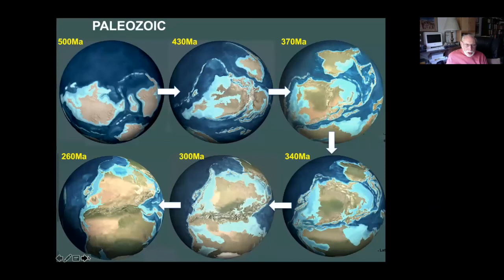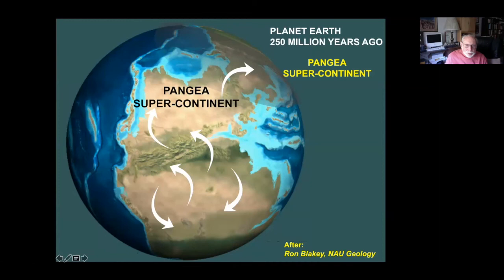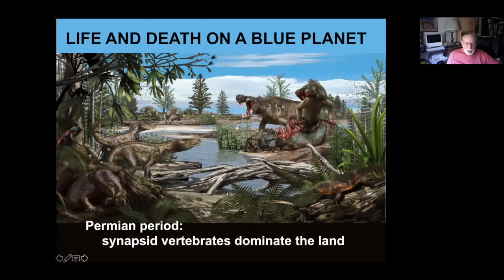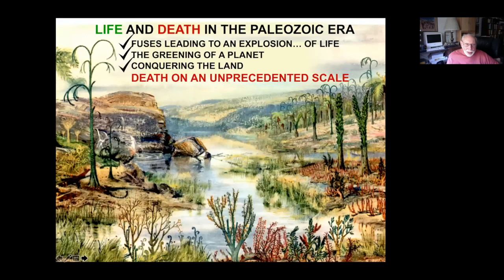This was facilitated by plate tectonics, because the Paleozoic was a time where the continents were merging. By the end, at 260 million years ago, they had merged into the supercontinent Pangea. This continent allowed for essentially unimpeded migration of animals to all parts of the continent that could sustain life. So the Earth's surface was conquered by the vertebrates, by the animals. At the Permian, the synapsid vertebrates dominate the land. But that was going to change — it was going to change because of death on an unprecedented scale.